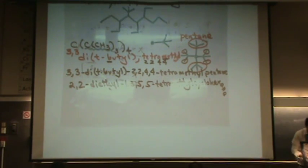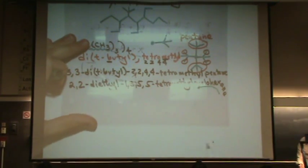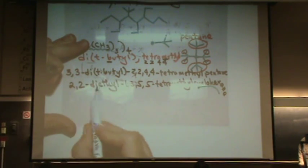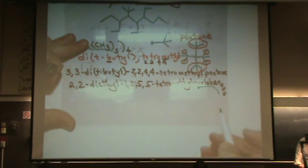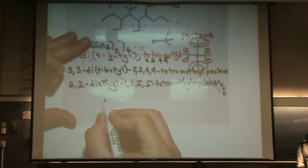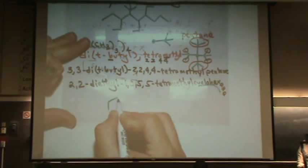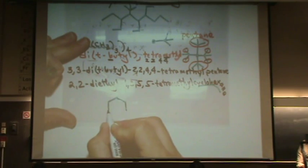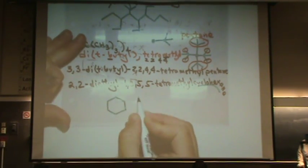And then for the last one, again, we're given a name, and we're going to draw it. So it says, when you're given the name, start with the base name, which is cyclohexane. So it's 2,2-diethyl-1,3,5,5-tetramethylcyclohexane. So for the cyclohexane, there's cyclohexane.